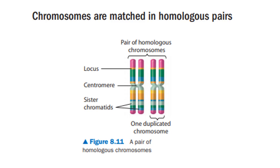In human females, the 46 chromosomes fall neatly into 23 homologous pairs. For males, however, the chromosomes in one pair do not look alike. The non-identical pair, only partly homologous, is the male's sex chromosomes. These sex chromosomes determine an individual's sex, although they also carry genes that perform other functions. In mammals, males have one X chromosome and one Y chromosome, while females have two X chromosomes. The 22 remaining pairs of chromosomes, both in males and females, are called autosomes.